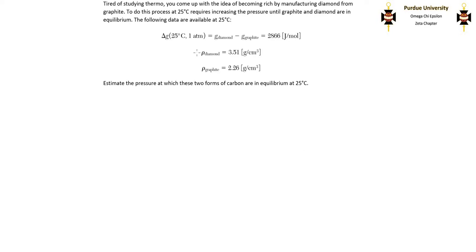What this problem is asking us to do is, with a fixed temperature of 25 degrees Celsius, we need to find an equilibrium pressure at which this is going to be equal to zero, because the Gibbs free energy of diamond must equal the Gibbs free energy of graphite at equilibrium.